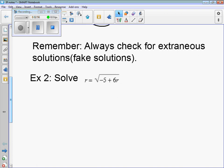So at number 2, we have r equals the square root of negative 5 plus 6r. The square root, again, is all by itself, isolated on one side of the equal sign. The square root opposite is square. So we have r squared equals negative 5 plus 6r, so the square root and square cancel.